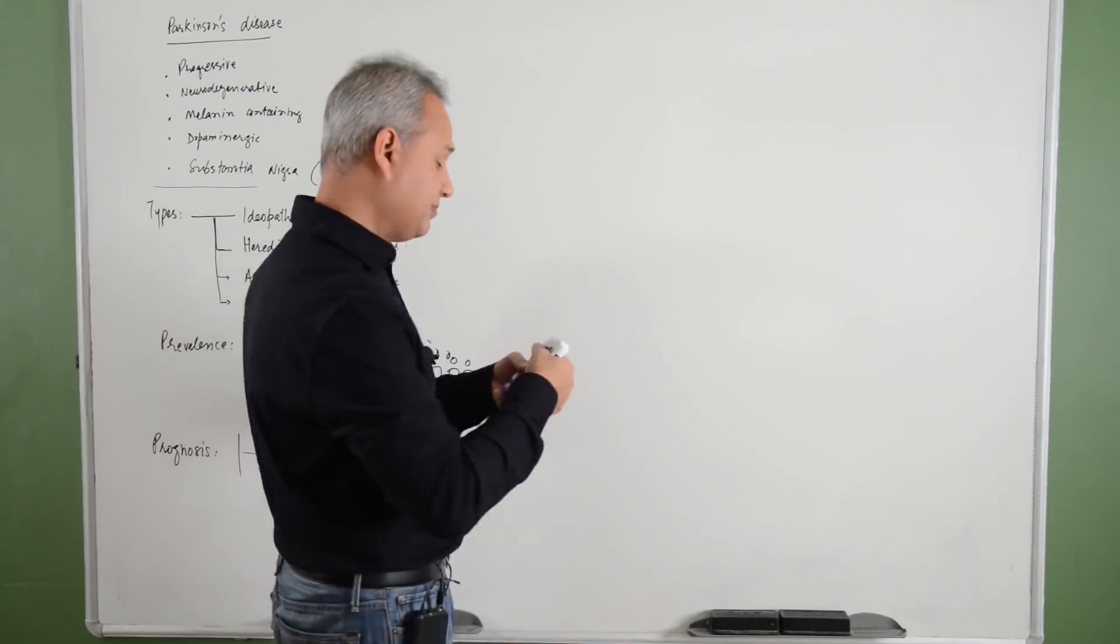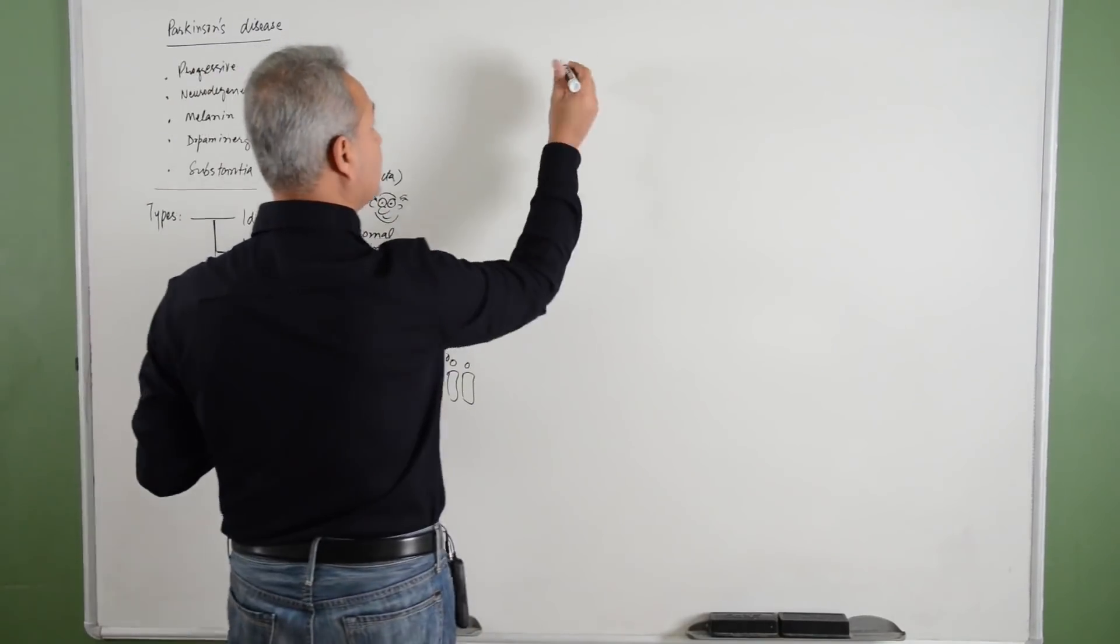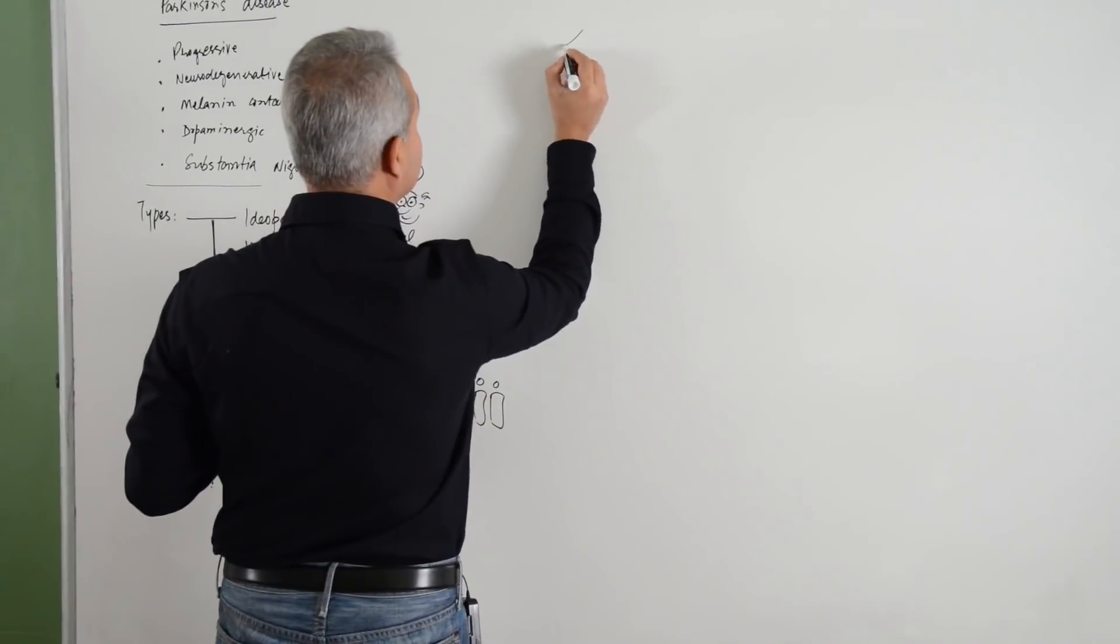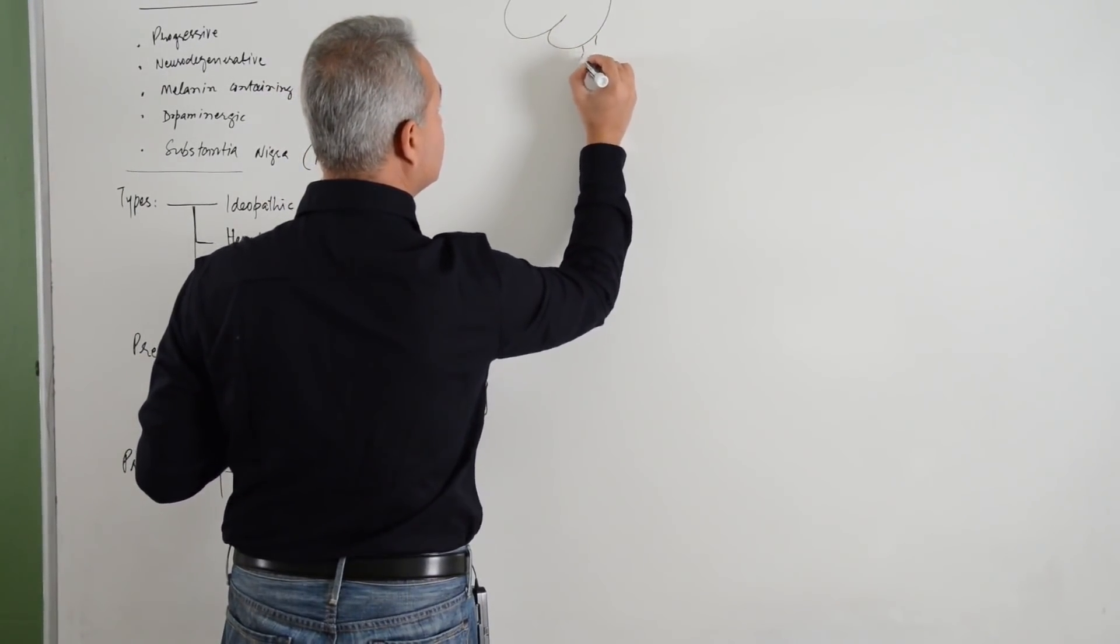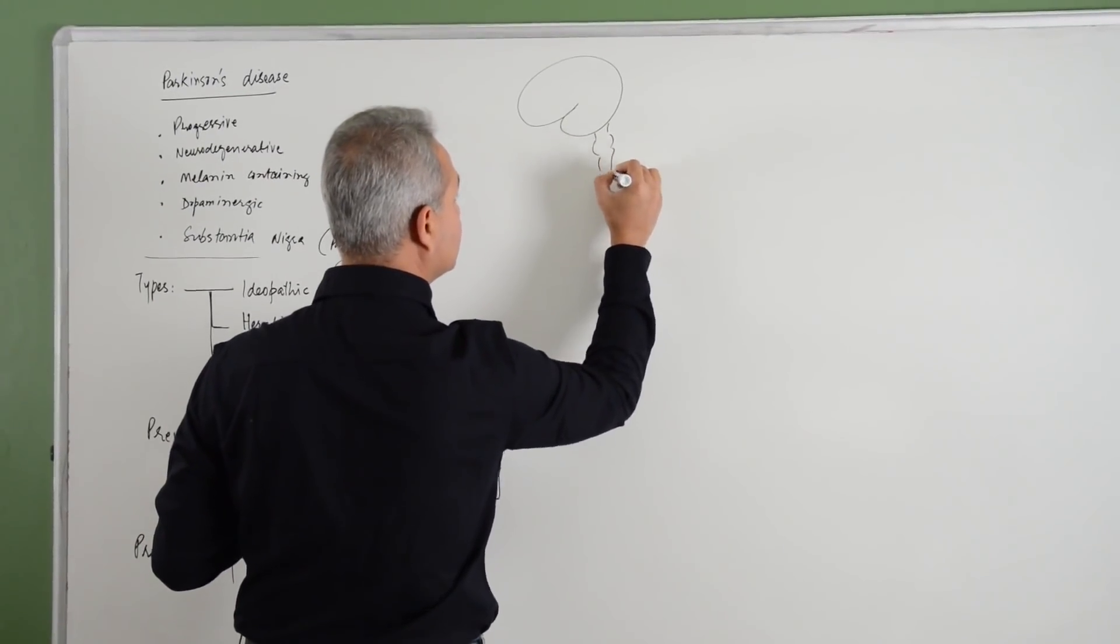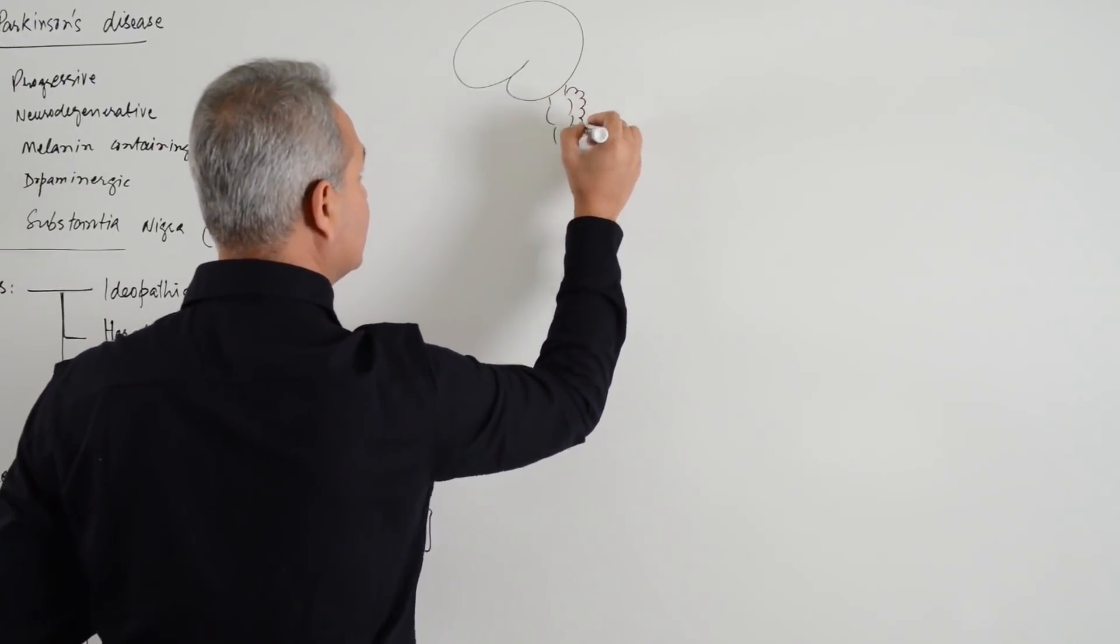Now, there are four dopaminergic pathways, so let us very quickly see what are the four pathways. If this is the cerebrum and this is the midbrain, pons, medulla, and let us say here is the cerebellum.